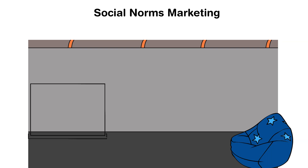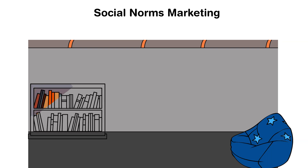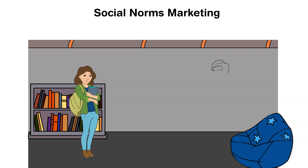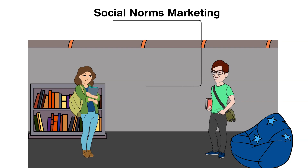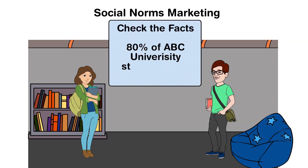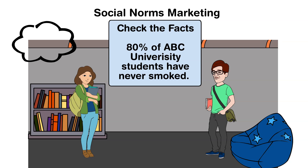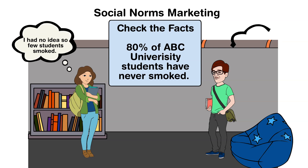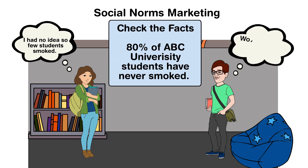It is based on the idea that people's behaviors can be predicted by what they perceive as normal or usual. For example, if university students believe that most of their peers smoke, they are more likely to smoke. But by using social norms marketing, people understand that the majority of their peers do not smoke, potentially leading them to avoid smoking because people actively strive to emulate what they believe is typical of their peers.